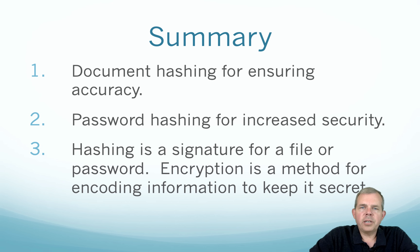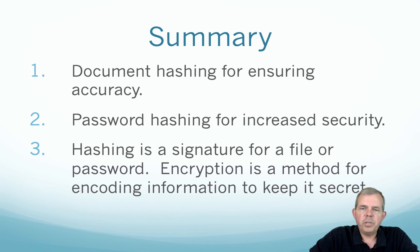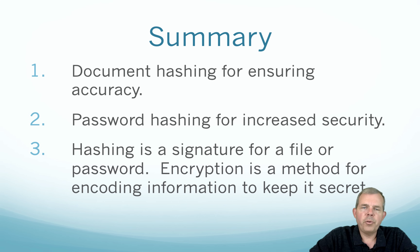In summary: document hashing is used to ensure accuracy — before you download a piece of software, you can check if it's been modified. Password hashing is used to increase security — never store clear text passwords in your database, and avoid old hashing routines like MD5. It's also important to distinguish between hashing and encryption: encryption is a method for encoding information, while hashing is a method for identifying.